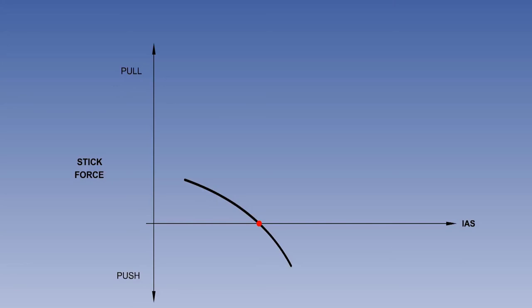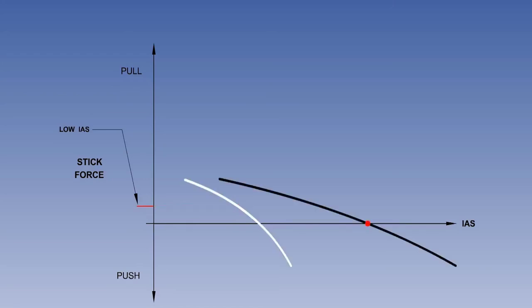The plot shows the stick force gradient with the aircraft in trim at low indicated airspeed. To maintain a speed reduction of, say, 10 knots at low speed, a certain pull force is required. The plot also shows the stick force gradient with the aircraft in trim at a higher speed. To maintain the same 10-knot speed reduction from trim speed at a higher speed, a pull force is still required, but the required pull force is smaller.